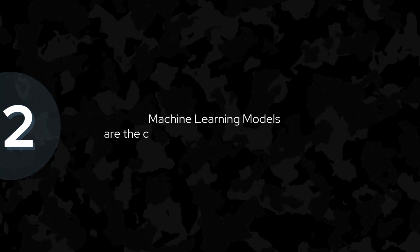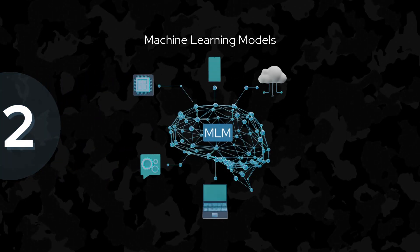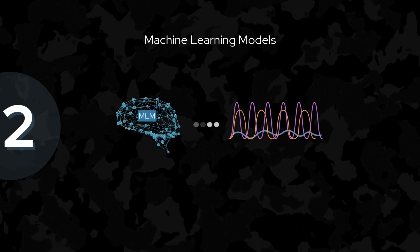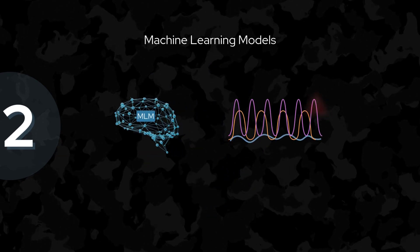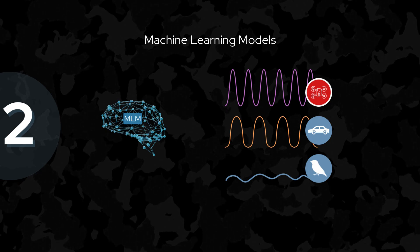Machine learning models are the core of fast and accurate detection. By learning from large datasets of drone sounds, the models can recognize drones even in noisy environments, improving over time to distinguish drones from other noises like birds or traffic.